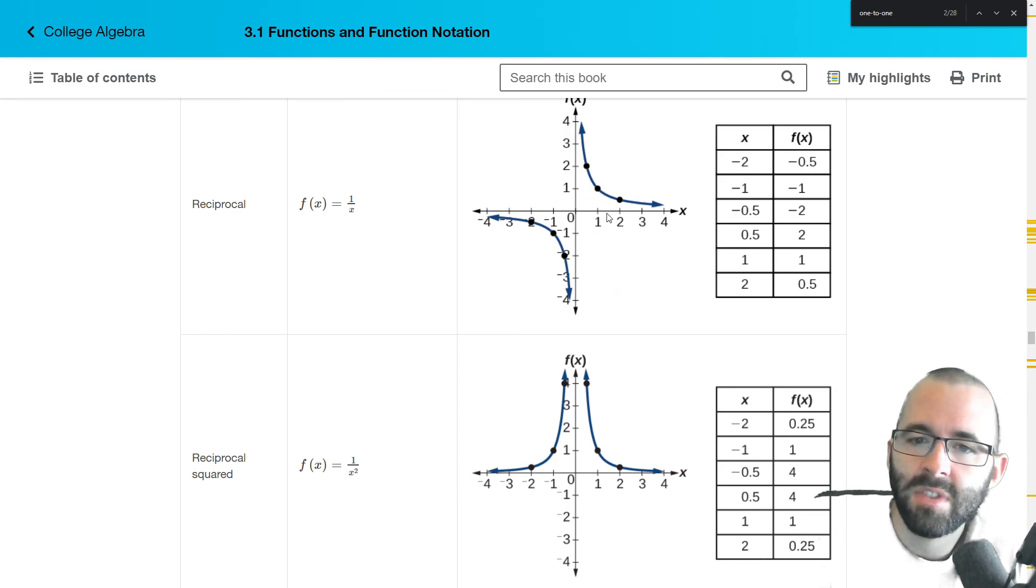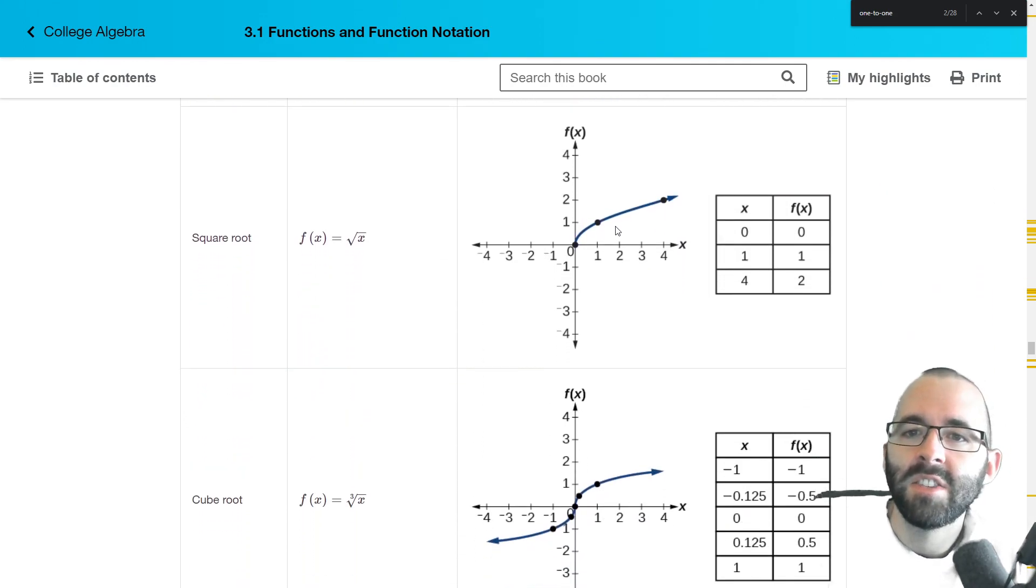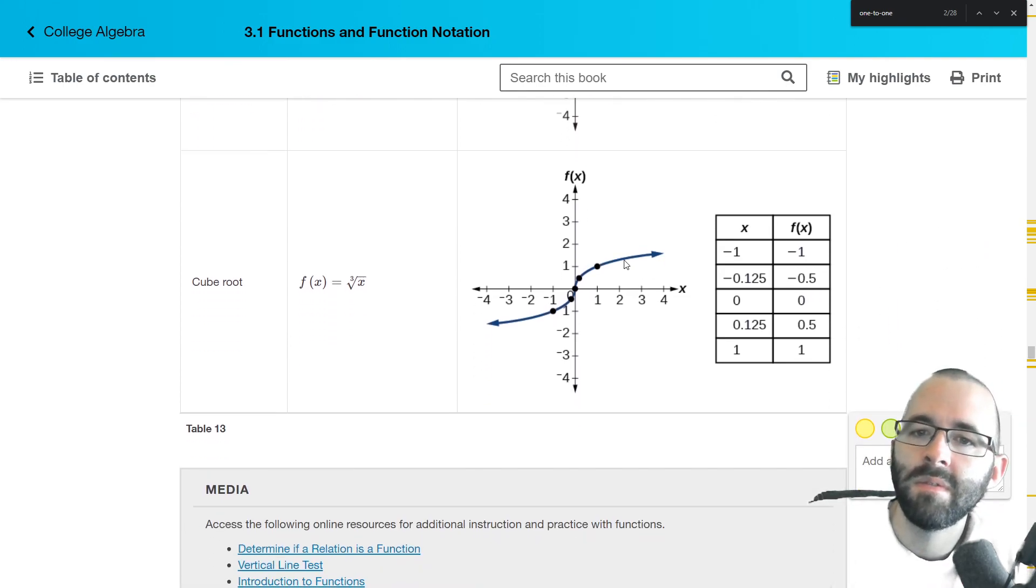Just be familiar with the shape. Just kind of say, oh, I've seen this before. But you may not have, but now you have. Square root, all right, kind of looks like half of a sideways parabola, right? If we extend the sound, it's kind of a parabola. One to one. Cube root. It's a sideways cubic function. Also one to one, passes the horizontal line test.